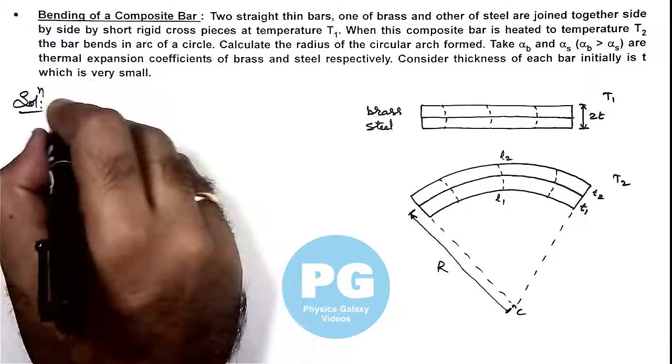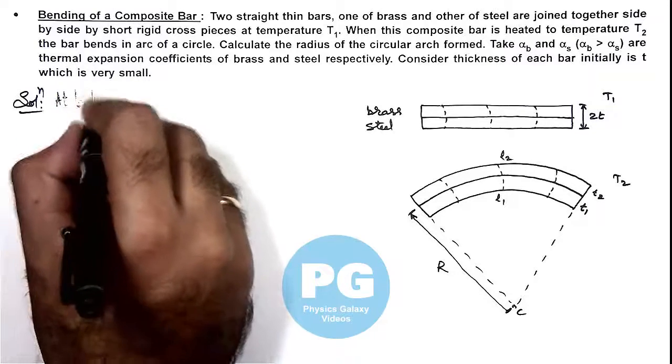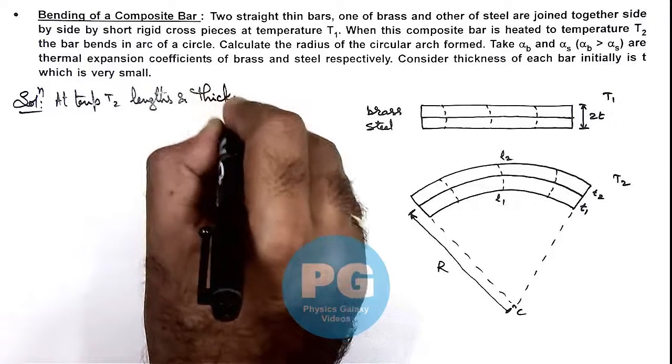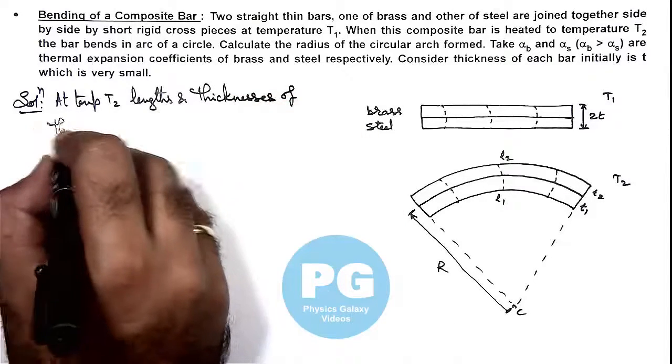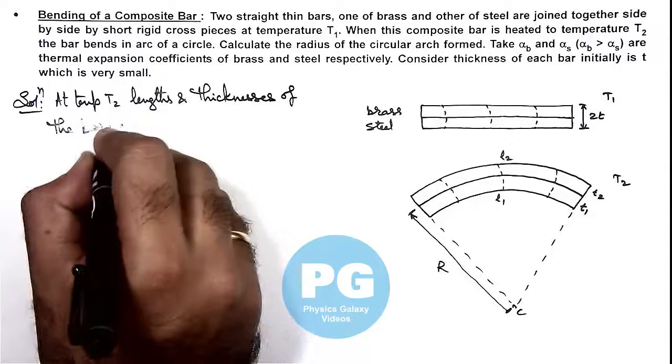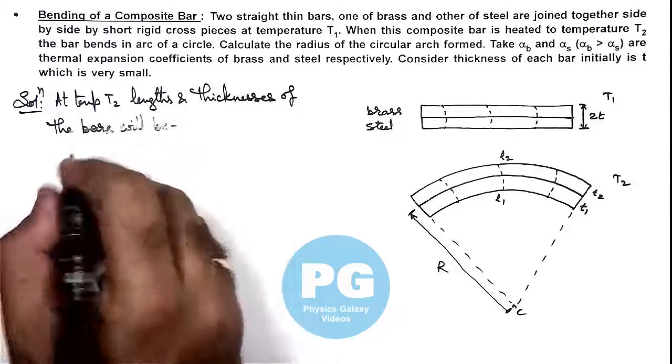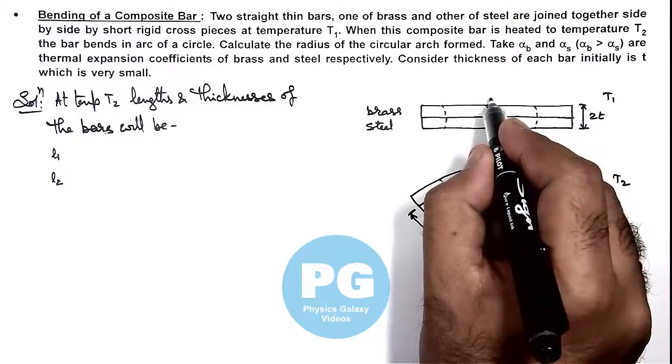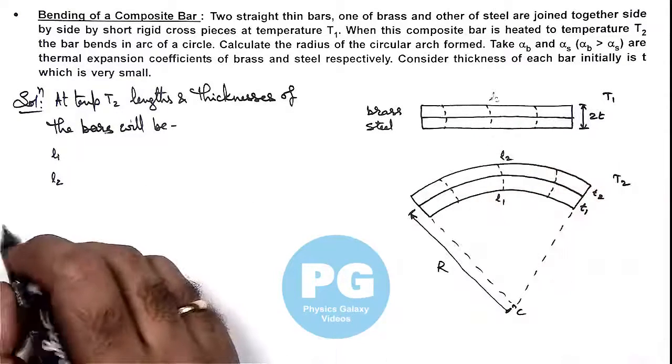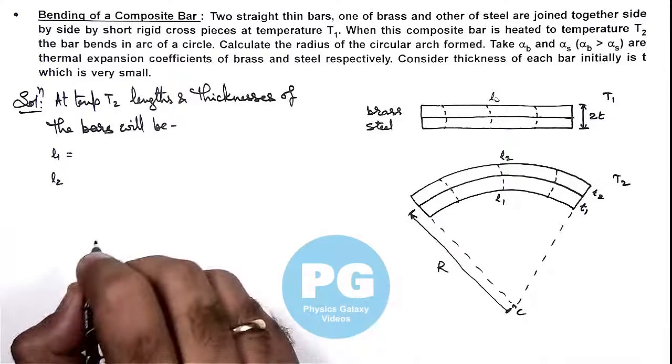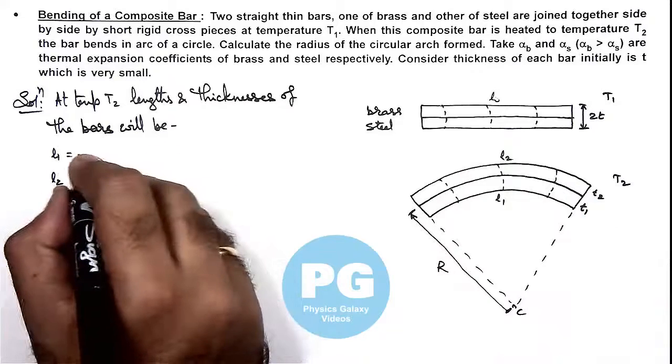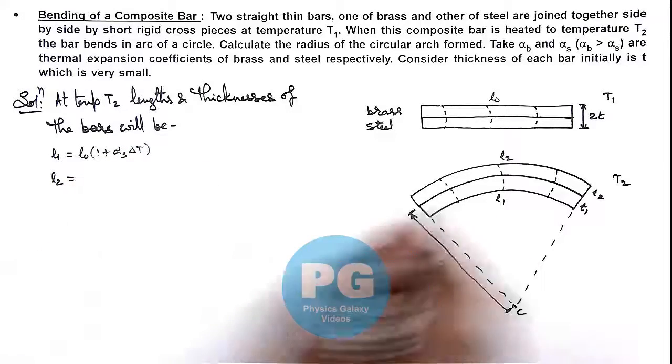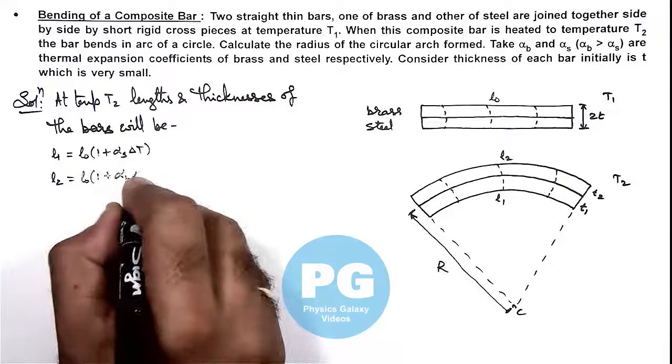At temperature T2, lengths and thicknesses of the bars will be L1 and L2, which are equal. So this L1 for the steel bar, after heating it to T2, we can write this should be L_0 times (1 + alpha_s × ΔT). And for brass, it is L_0 times (1 + alpha_b × ΔT).